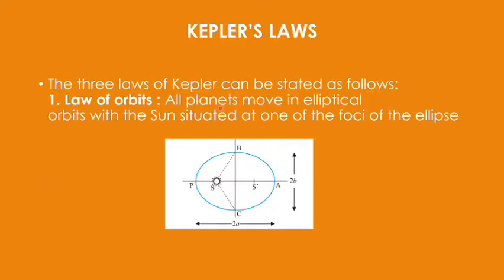Kepler gave three laws based on general observations taken by Galileo — Kepler was his assistant and compiled all the work. The first law given by Kepler is the Law of Orbits, which says all planets move in an elliptical orbit around the sun, situated at one of the foci of the ellipse.